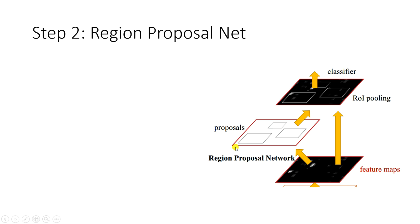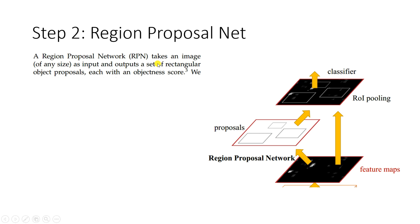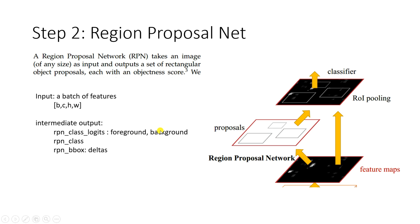A Region Proposal Network takes an image of any size as input and outputs a set of rectangular object proposals, each with an objectness score. That's the intuitive description from the paper. But when you think of things in terms of data structures, the input is a tensor of shape: batch × depth × height × width.